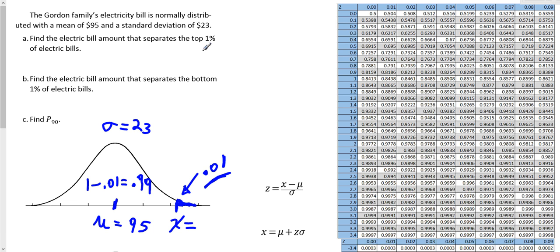It doesn't matter what they ask for — in this table, you can only find the area to the left. So if you need the area to the right, for instance the top 1%, you take 0.01 and subtract it from 1 to get the bottom 99%, then look for that number. We're looking for the closest number to 0.99. There are two close values: 0.9901 and 0.9898. The value 0.9901 is the closest — only 0.0001 away from 0.99.